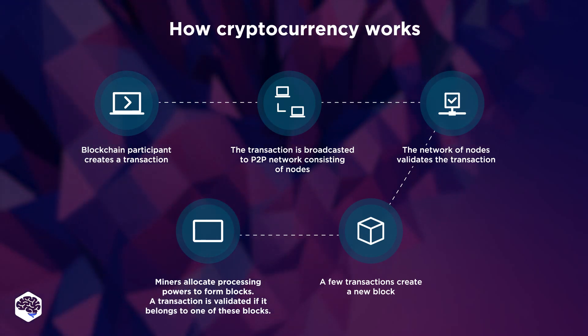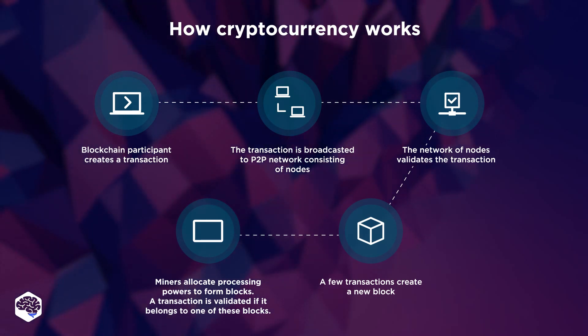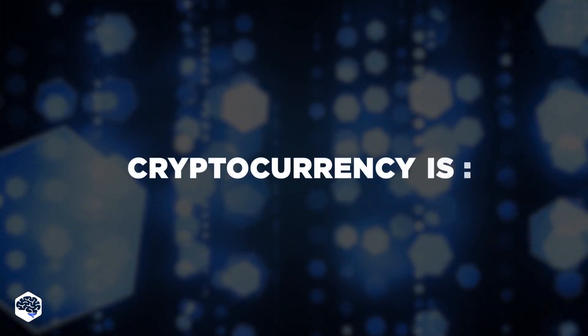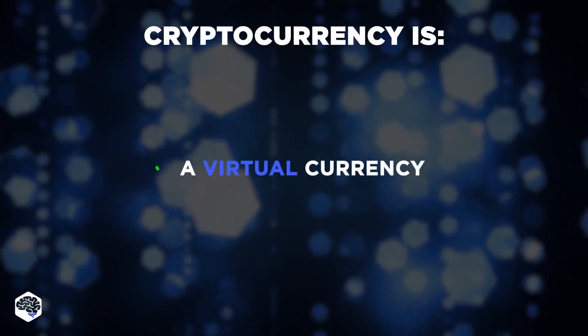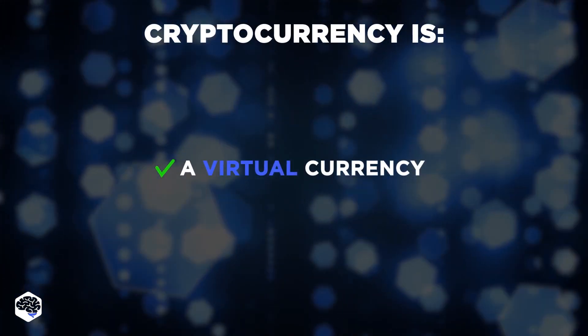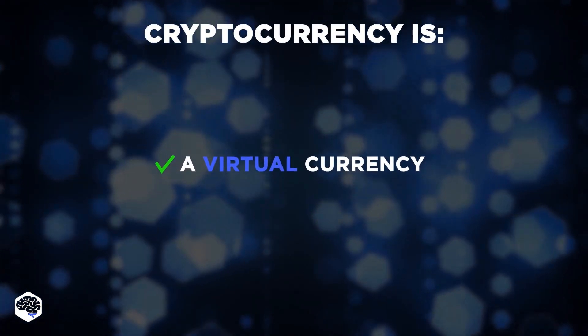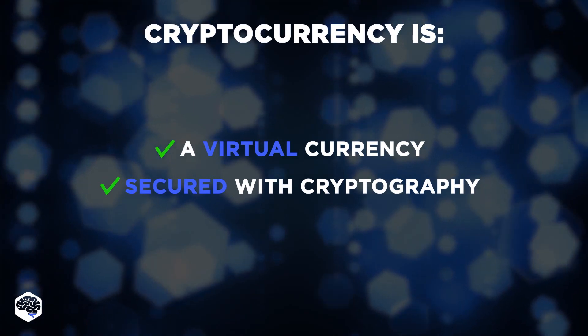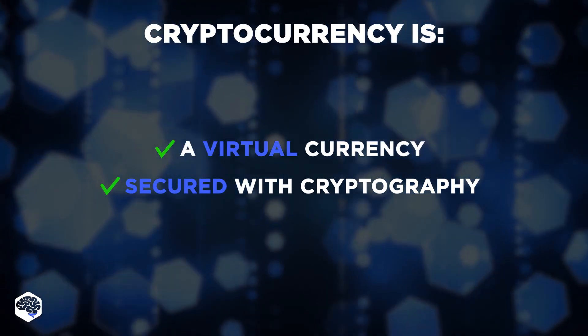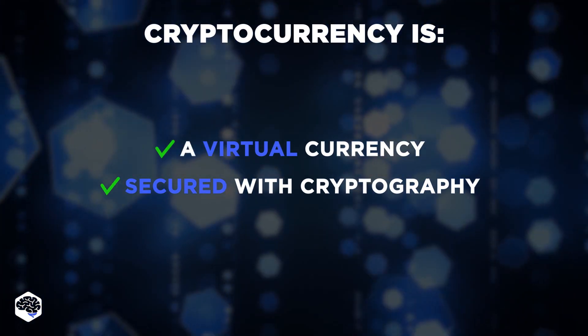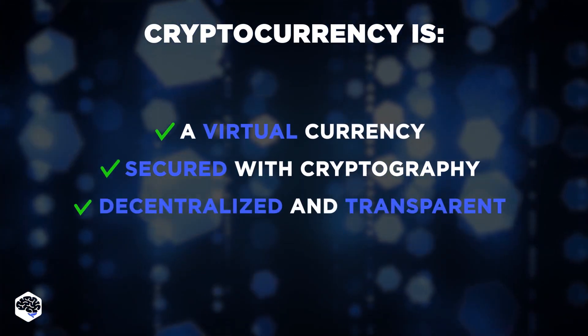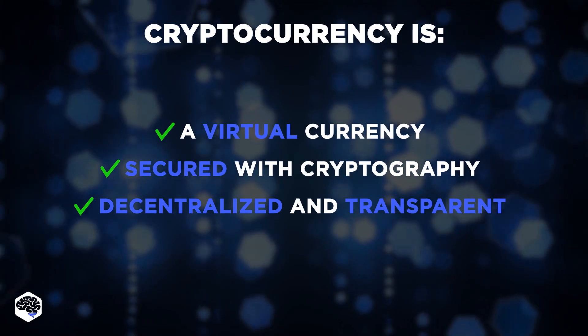Talking about the key characteristics of cryptocurrency: cryptocurrency is a virtual currency, it is secured with cryptography, and the most important feature of cryptocurrency is decentralization and transparency.